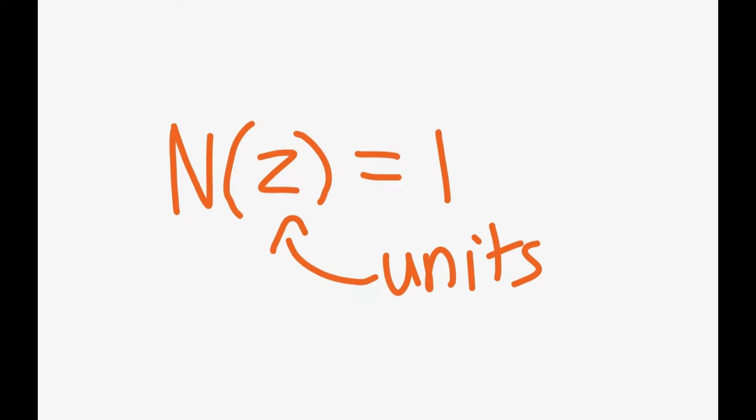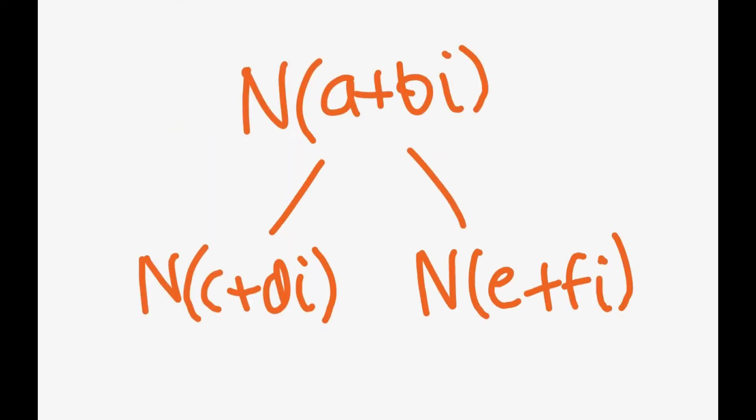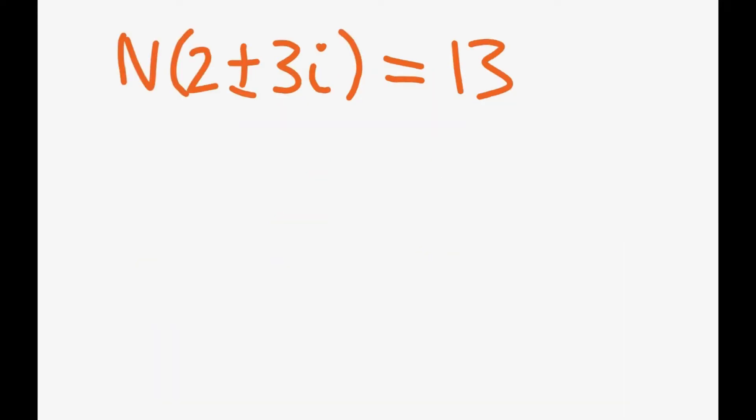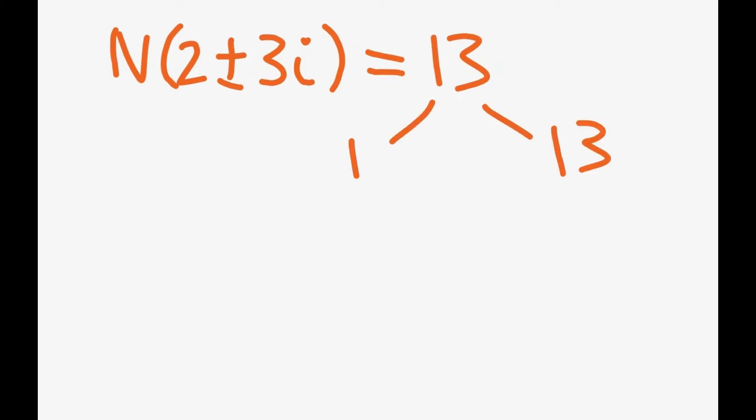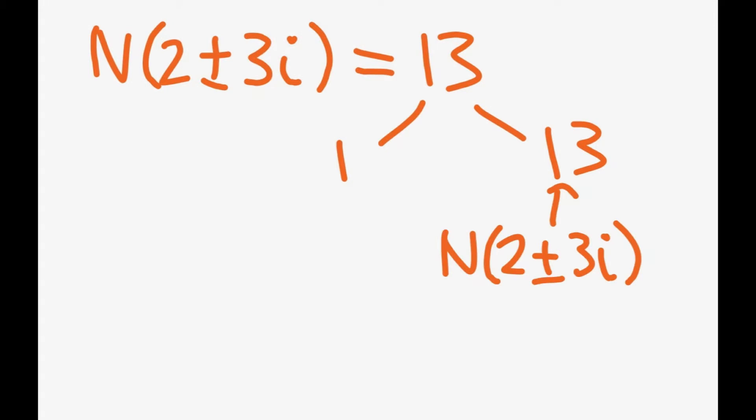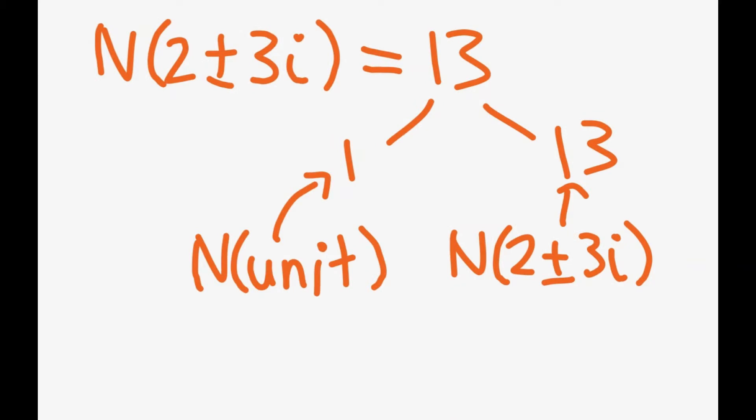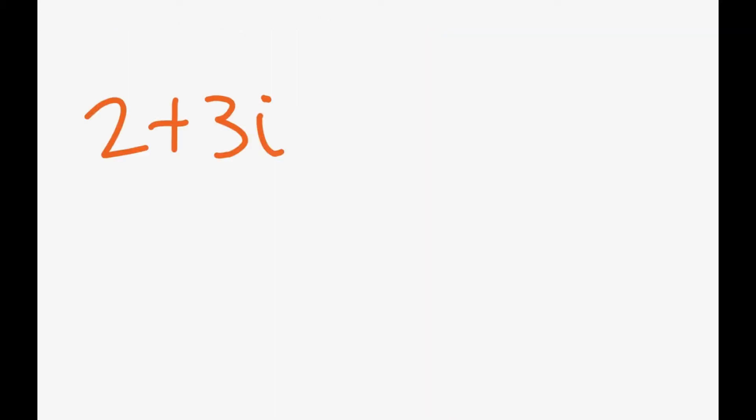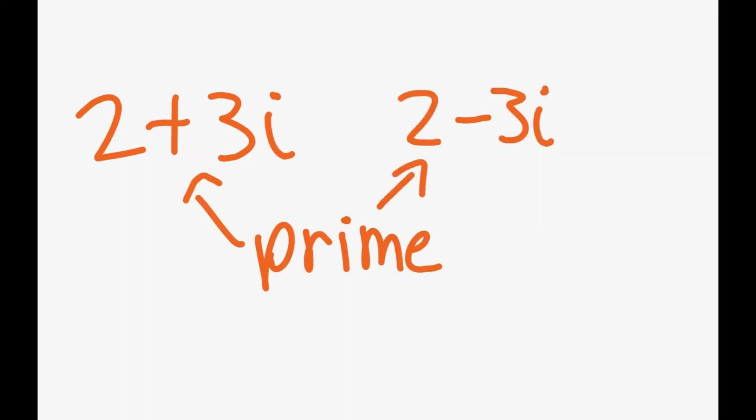Now, because the norm is multiplicative, we can factor a Gaussian number by factoring its norm. With 2 plus 3i and 2 minus 3i, their norm is 13. Since the norm is prime, we can only factor the prime into 1 times 13. Obviously, the 13 part came from the norm of 2 plus 3i or 2 minus 3i. However, the 1 part clearly came from a unit. Because there is no other non-unit Gaussian integer that divides 2 plus 3i, we can conclude that 2 plus 3i is a Gaussian prime. Same with 2 minus 3i.